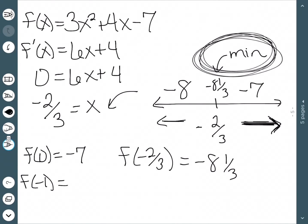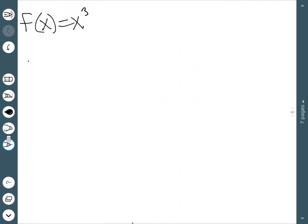Let's look at one more example. f(x) = x³. If I take the derivative, I get f'(x) = 3x². And if I want to know when this is equal to zero, well, that happens at x = 0.